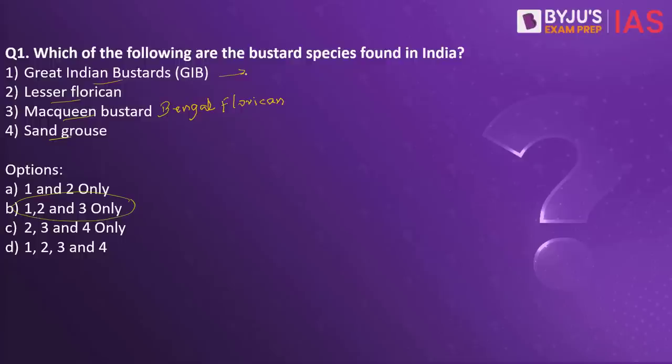What are the major threats to these Bustard species? One, as they are heavy birds, when they take flight they hit power transmission lines and die. At the same time, there are a number of developmental activities taking place in the grasslands, and there is also development of agricultural activities as well — these are major threats to the Bustard species.